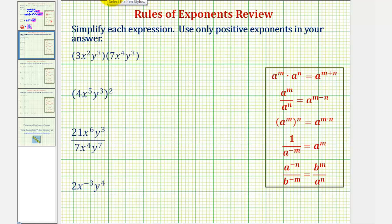We want to simplify each expression using only positive exponents. In our first example we have three x to the second and y to the third times seven x to the fourth y to the third.